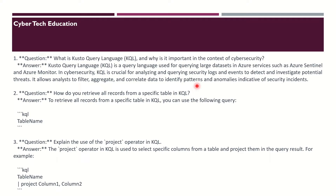The next question asked is: how do you retrieve all records from a specific table in KQL? To retrieve all records from a specific table in KQL, you can use the following query: simply write the table name. The next question is: explain the use of the project operator in KQL.